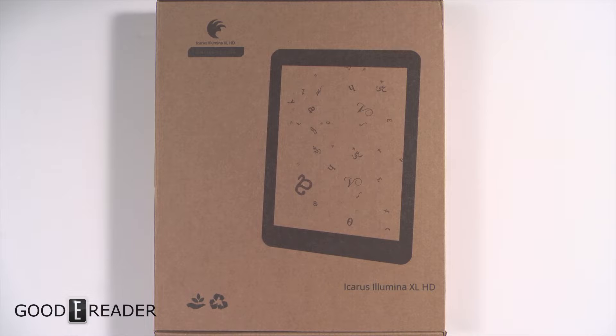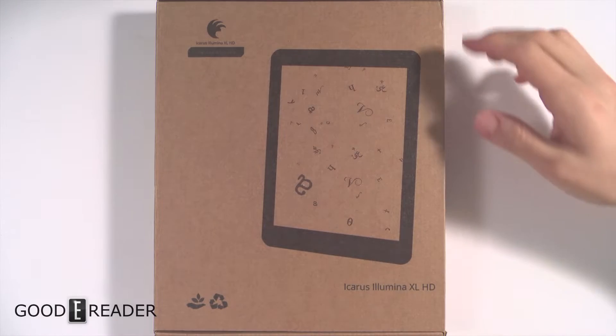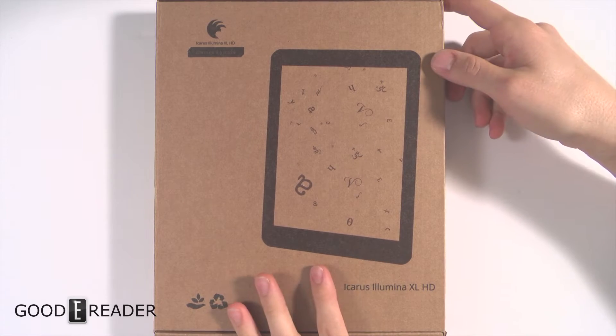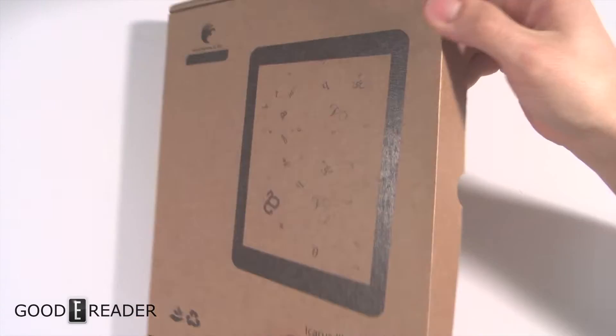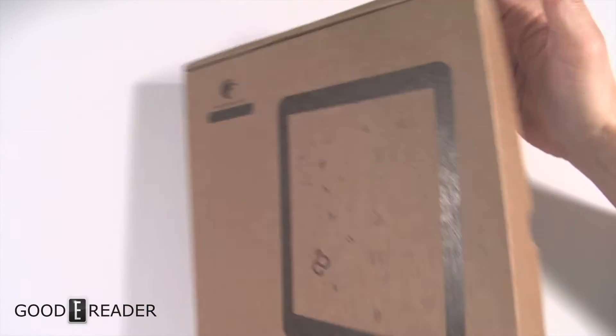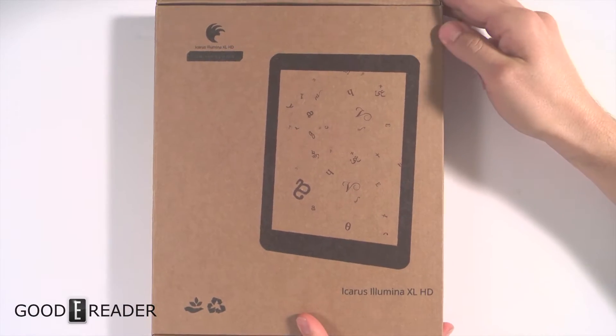Hey everyone, welcome to a Good e-Reader unboxing video. My name is Michael, this is Peter. Today we have the Icarus Illumina XL HD, their latest device. It features a 7.8 inch E Ink Carta display with resolution 1872 by 1404 at 300 PPI, so it's really good.